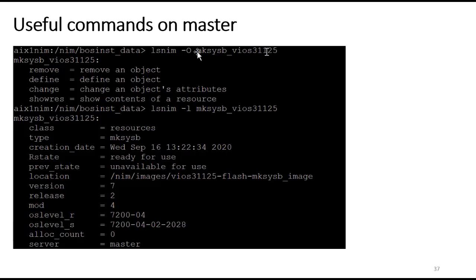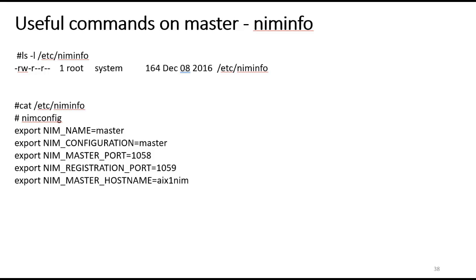On the master I have the ability to do something like 'lsnim -o makesysb', which will tell me what actual options I can perform against that makesysb — remove it, define it, change it, or show res it. Using LSNIM -l, the interesting thing about the VIO server image is it doesn't show as VIO 3.1.1.2.5 — it actually shows as AIX 7.2 TL4 SP2, because that's what it is under the covers. There is a NIM info file in /etc on both clients and the master. On the master you'll see the NIM name, NIM configuration, master NIM port, registration port, master hostname, and other parameters.